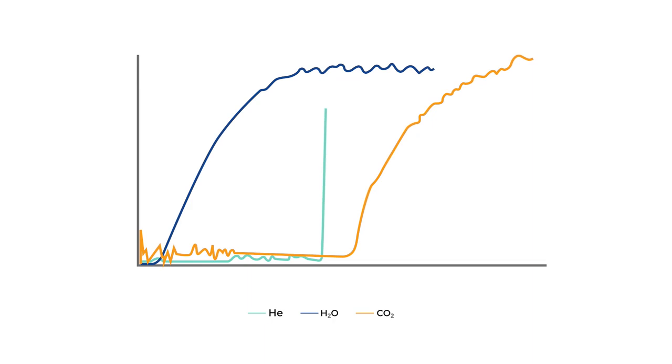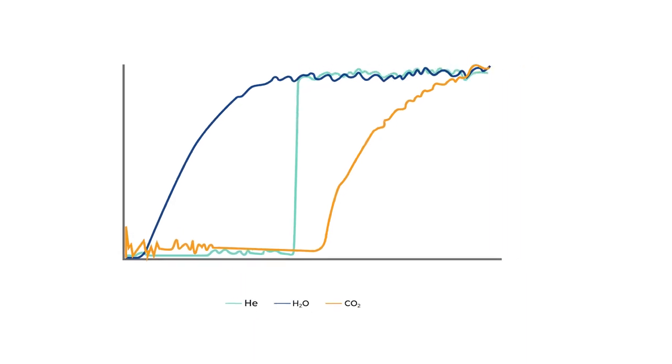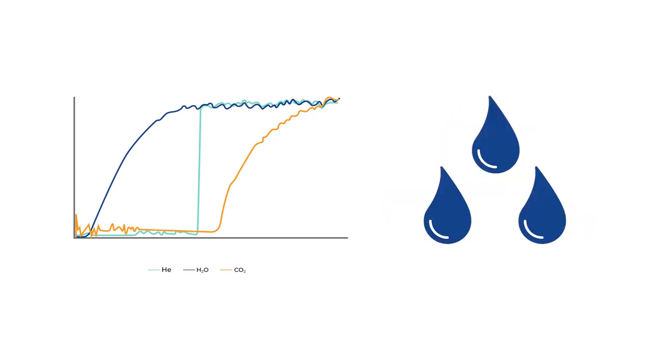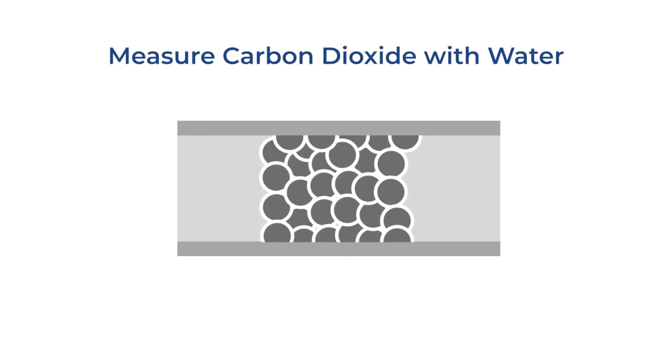Breakthrough allows users to analyze multiple gas flows at a time. Water is a common impurity in a variety of processes, and breakthrough allows researchers to measure the impact of humidity on their process. Now let's imagine we want to measure CO2 adsorption in the presence of humidity.